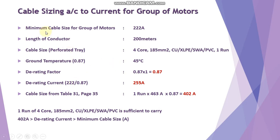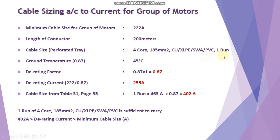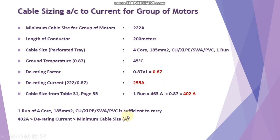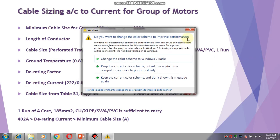Now we check the current rating. The minimum cable size is 222 amperes, conductor length is 200 meters, and the selected cable is 185 mm² 4-core copper XLPE armored PVC with one run. From the cable table, the 4-core 185 mm² cable has a current rating of 463 amperes. The ambient temperature is 45°C, giving a derating factor of 0.87. Since we are using one run, the overall derating factor is 0.87.